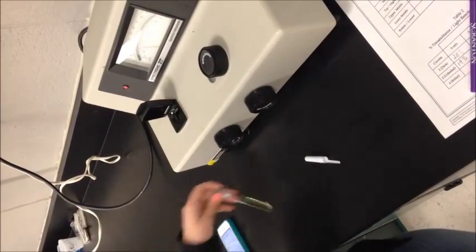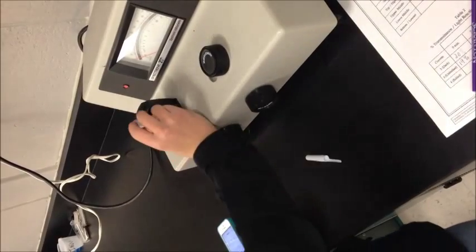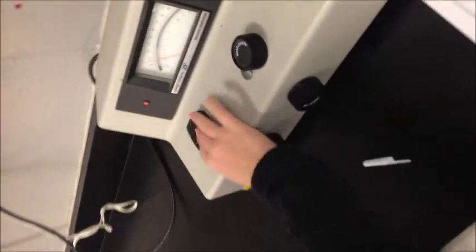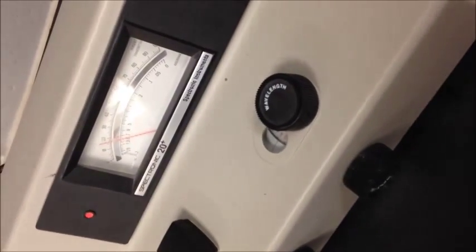So this is cuvette 4 with the boiled chloroplast. We're putting this in to test the initial transmittance percent, and it looks like about 17%. So we'll record that, take it out, put it underneath the light with the other cuvettes, and then in 5 minutes we'll test it again.